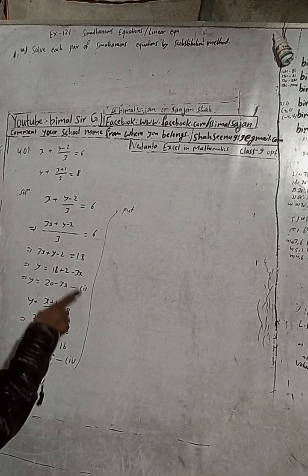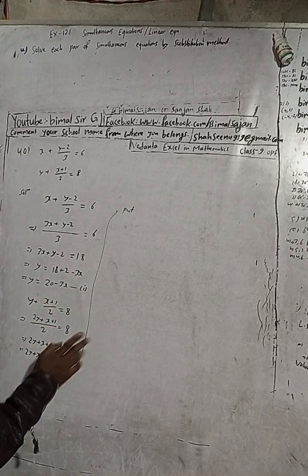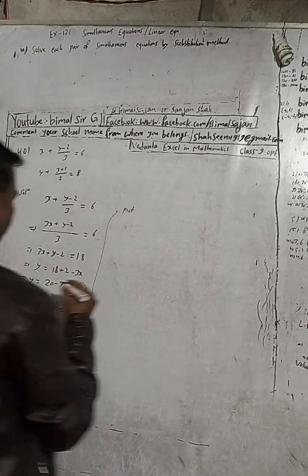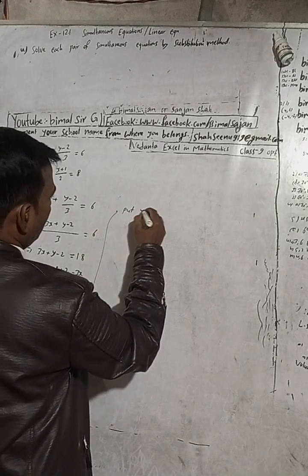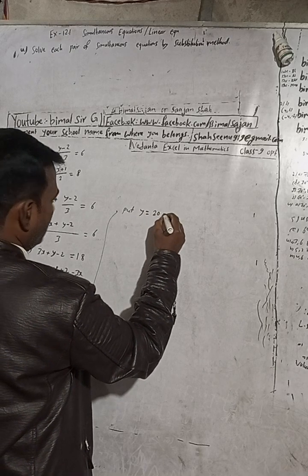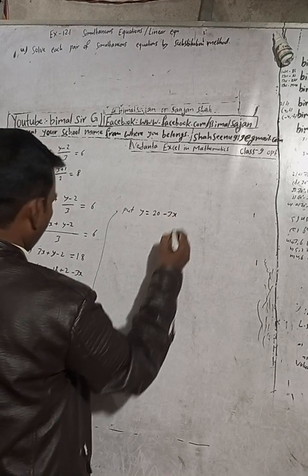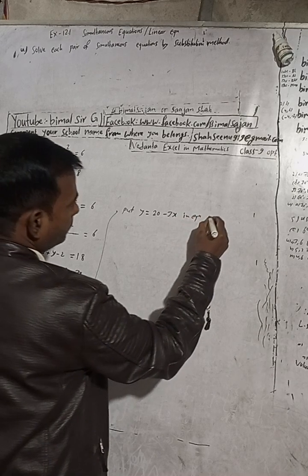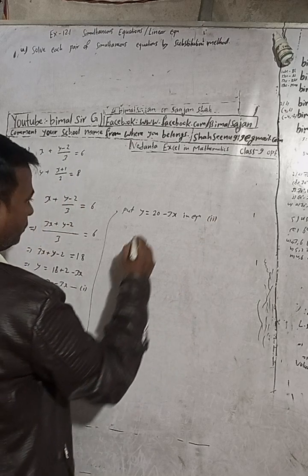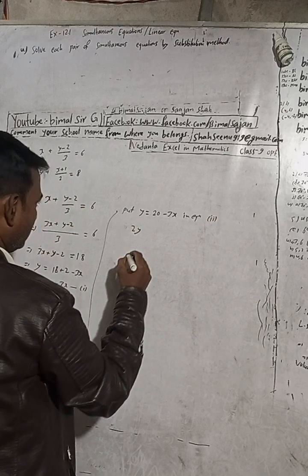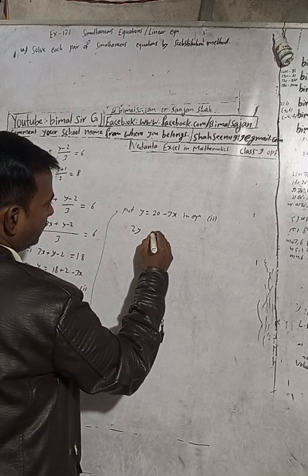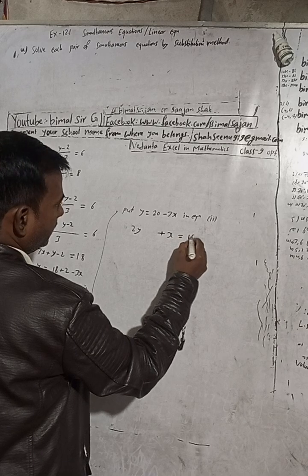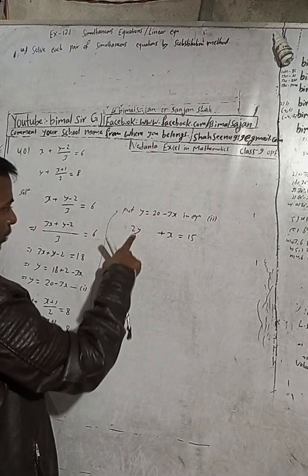Now substitute the value of y from equation 1 into equation 2. We have y is equal to 20 minus 3x. Equation 2 is 2y plus x equals 15.